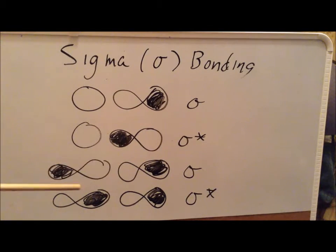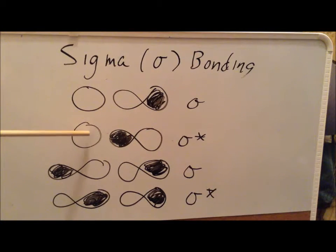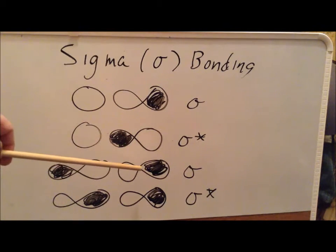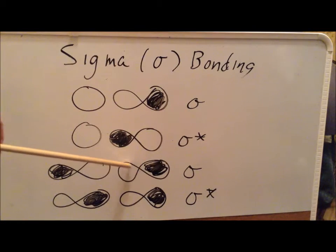One thing to keep in mind: the nucleus for an s orbital is at the center of the circle, while the nucleus for a p orbital is at the crossover point of the figure-eight shape.